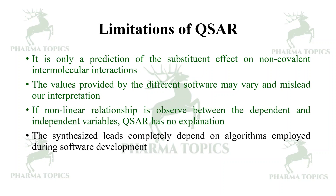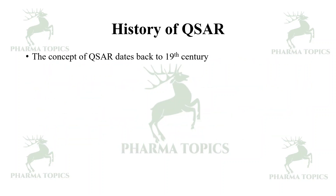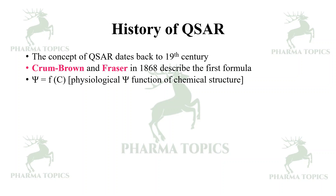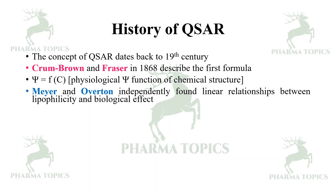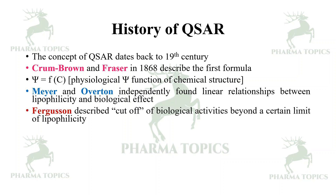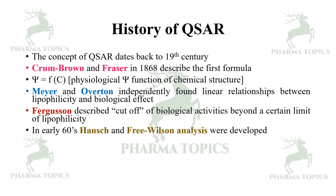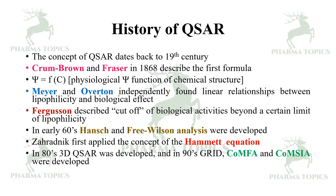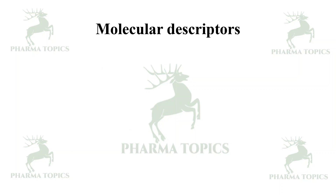The history of QSAR dates back to the 19th century. Crum Brown and Fraser in 1868 described the first formula — biological activity is a function of chemical characteristics of a molecule. Meyer and Overton independently found linear relationships between lipophilicity and biological effect. Ferguson described a cutoff of biological activities beyond a certain lipophilicity limit. In the early 1960s, Hansch and Free-Wilson analyses were developed; Zartnik first applied the Hammett equation concept. In the 1980s, 3D QSAR was developed, and in the 1990s, GRID, CoMFA, and CoMSIA were developed.